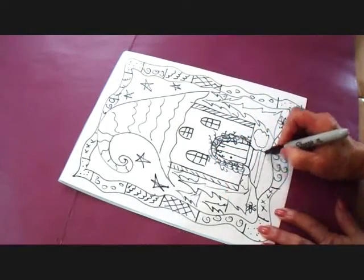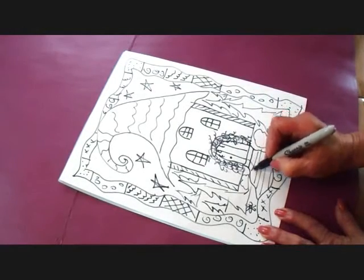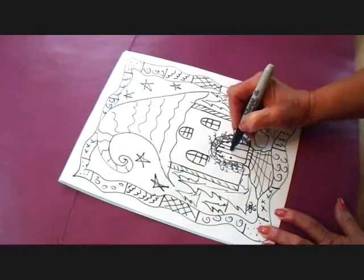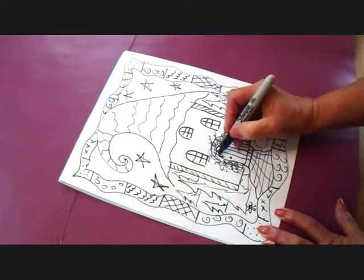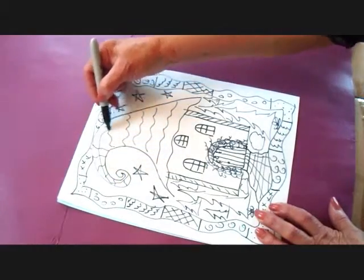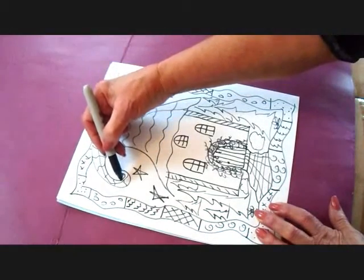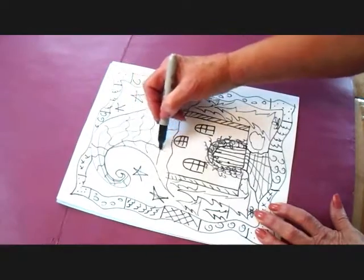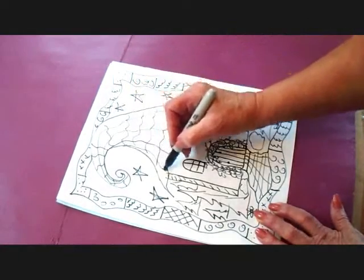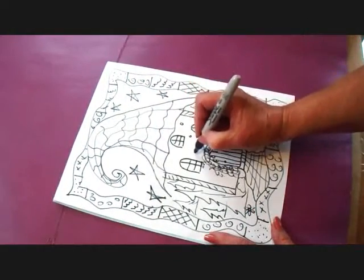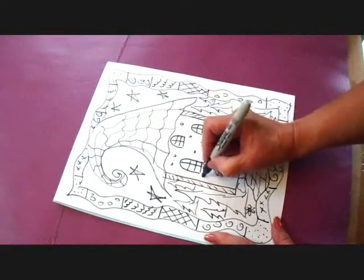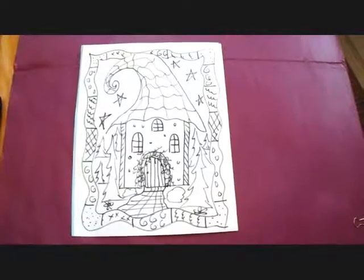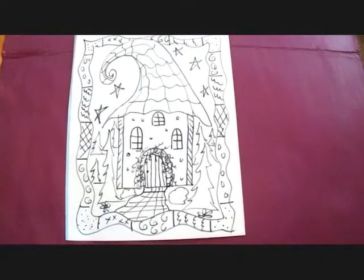And some cobblestones on the walkway, put a few more lines on the door. I'm just going to do some lines going around the roof here, and I'm going to put some polka dots all over the house, and there's your fairy house coloring page.